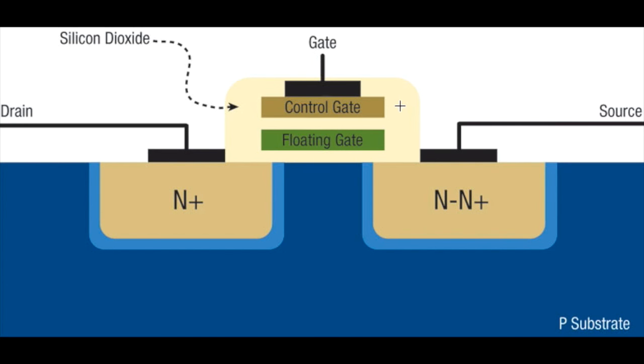When a pulse of high voltage of about 20 volts is applied for around 50 milliseconds at the gate terminal, a few electrons cross the barrier and end up in the floating gate. The presence of charges in the floating gate corresponds to the binary value of 0, while the absence of charges corresponds to the binary value of 1.